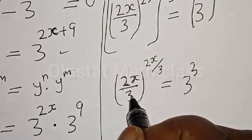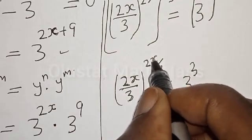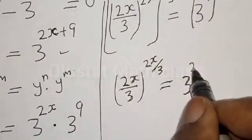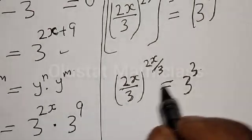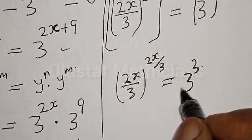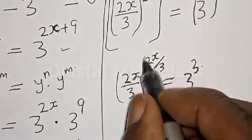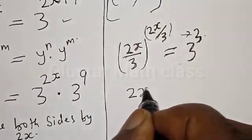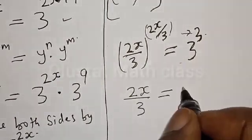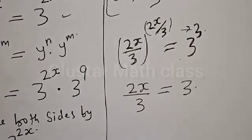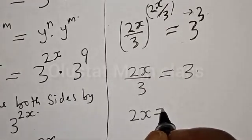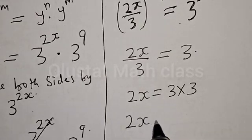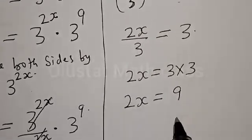So 2s divided by 3 is equal to 3 raised to power 3. Now by comparing both sides, we have 2s divided by 3 equals 3, and the power 2s divided by 3 also equals 3. Therefore 2s divided by 3 is equal to 3.